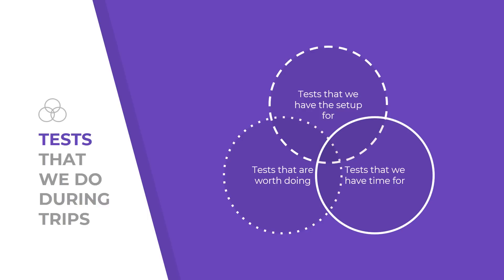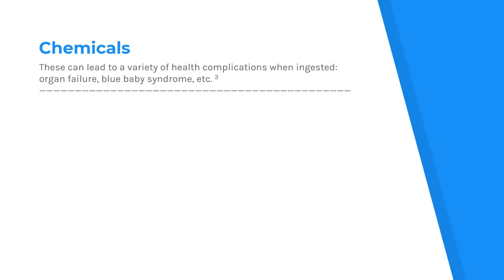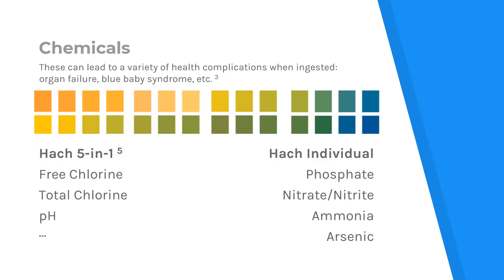There are a variety of different tests you can do in the field, but there are three main limiting factors: some require a very large setup, some are not worth doing in the field, and others take a lot of time. We have to focus on tests that we do have the setup and resources for while in country, that are important and give relevant information, and won't take excessively long. For chemical contaminants, we test using test strips — you take the strip, dip it in the sample, and after a few minutes compare the color the strip has changed to against a chart. HACH has 5-in-1 test strips covering free chlorine, total chlorine, pH, and more, and also individual test strips for a variety of different chemicals.